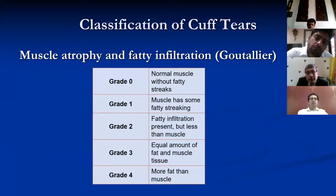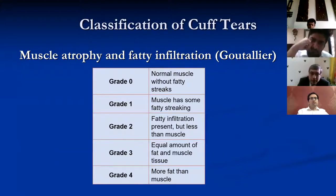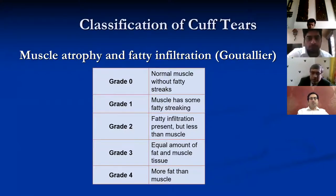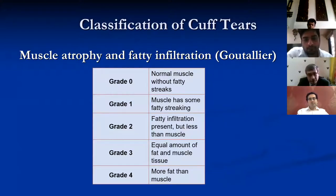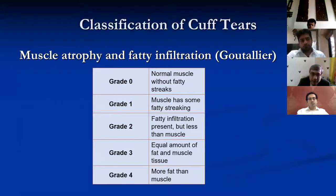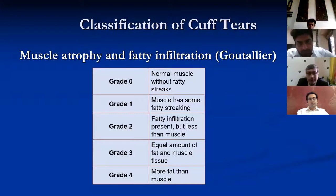When talking about cuff tears, we must always look at the muscle, which gives us an important indication of whether tears are repairable or irreparable. The Goutallier classification quantifies fatty infiltration from grade 0 to grade 4. Grade 0 is normal; Grade 1 has some fatty streaking; Grade 2 has less than 50% fatty infiltration; Grade 3 has near about 50% fatty infiltration; and Grade 4 has more than 50% fatty infiltration. In short, if there is 50% or more fatty infiltration, tears are likely irreparable. Do not confuse fatty infiltration with muscle atrophy — atrophy will always be present with long-standing cuff tears and does not mean irreparable. Fatty infiltration, with fatty streaks between muscle fibers, is where irreparability is determined.